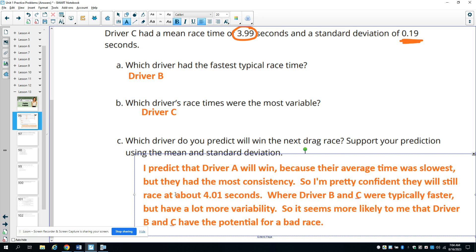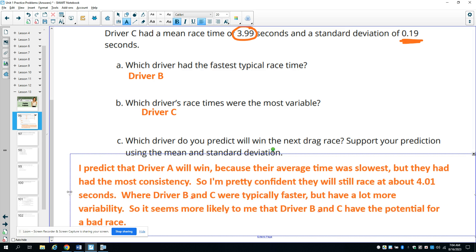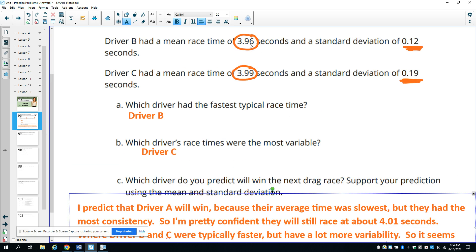So in my opinion, it seems more likely to me that driver B and C have the potential for a bad race. So again, this is just my opinion. Yours could be different. Like you could be like, well, driver B typically is the fastest, so I think they're going to win. And their absolute fastest score or race time would be down around 3.84 if you took this standard deviation and subtracted it off of here. So there's good justification for driver B. And there's good justification for driver C. Their fastest races are at 3.8 seconds if you subtract the standard deviation from here. So the idea here is just that you make a prediction and you support your prediction with the evidence of the typical race time and the deviation.